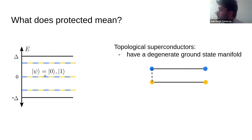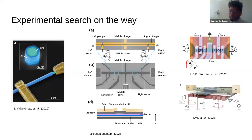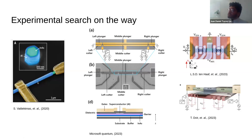Majoranas have been pursued experimentally, but it is not simple to make them. Behind the phrase 'topological phase' are multiple ingredients, all of which need to be fine-tuned and controlled. They appear typically in one-dimensional systems, for example long nanowires of indium arsenide, covered by a superconductor such as aluminum, and they need multiple gates around them to control the chemical potential.